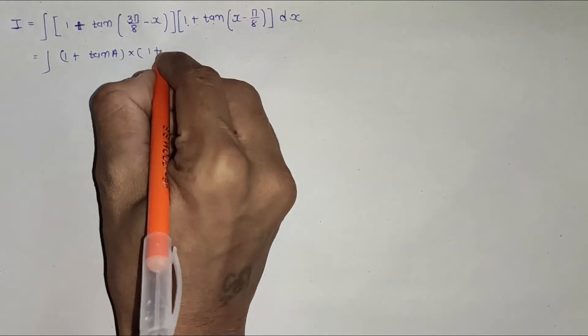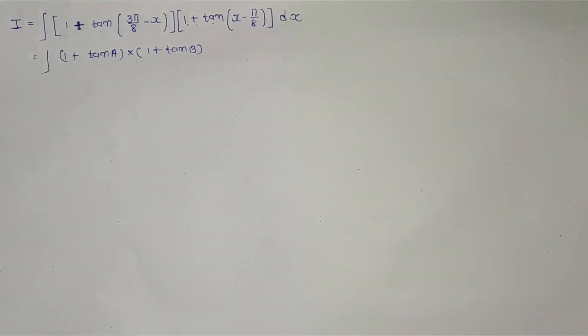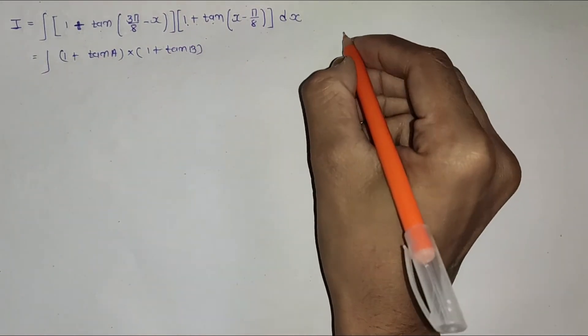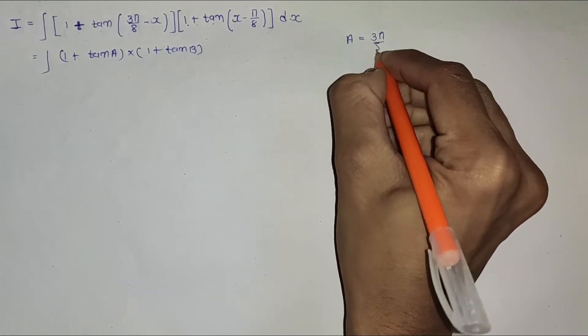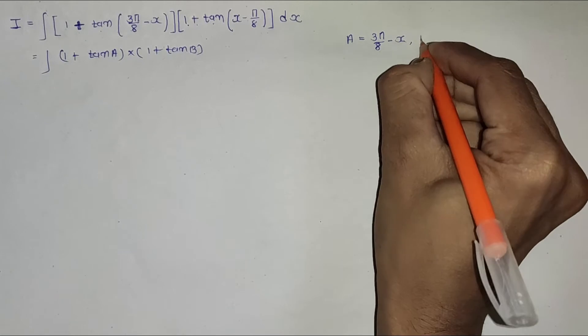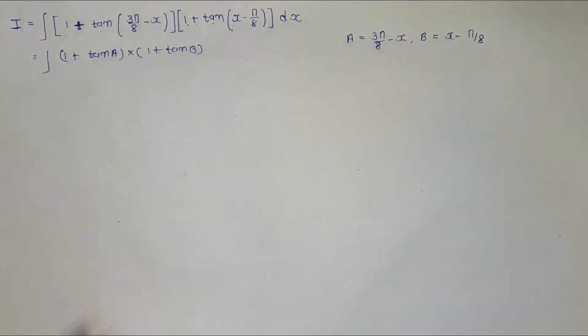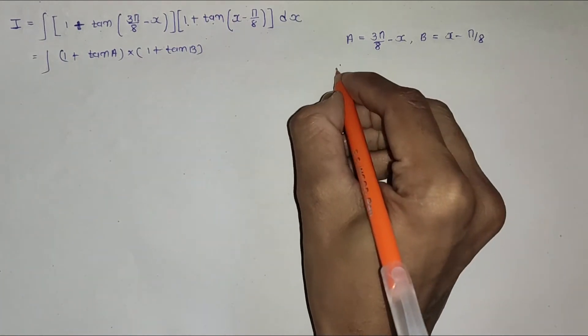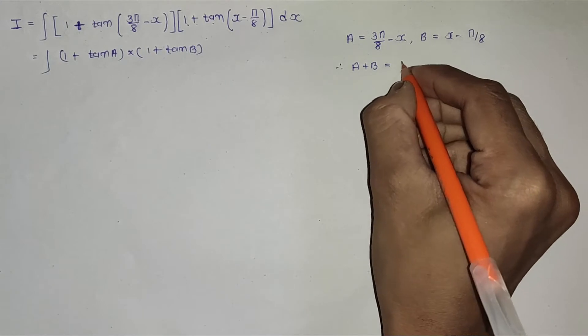Now let's make an observation here: a equals 3π/8 minus x, and b equals x minus π/8. Now if I add a plus b, then a plus b equals 3π/8 minus x plus x minus π/8.